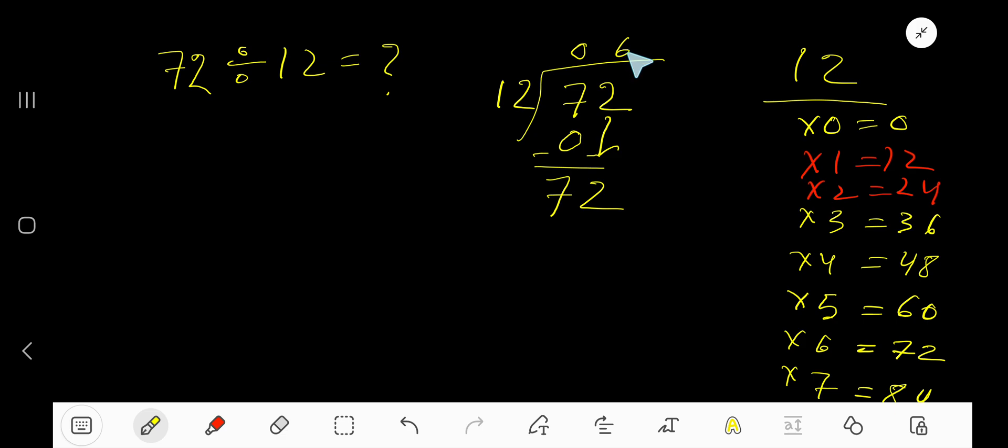6 times. Write 6, multiply 6 times 12 equals 72. Let me check: 6 times 2 is 12, write 2, carry 1 to the next column.